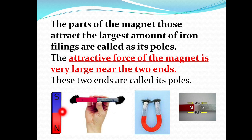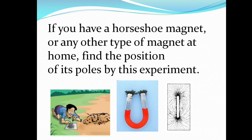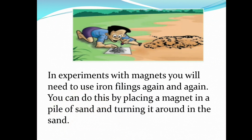One end is called the south pole and the other is called the north pole. If you have a horseshoe magnet or any other type of magnet at home, find the position of its poles by this experiment. In this experiment we will be using iron filings. In experiments with magnets, you will need to use iron filings again and again. You can collect iron filings by placing a magnet in a pile of sand and turning it around.